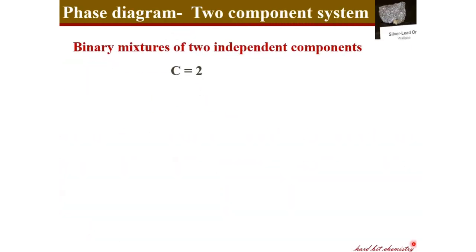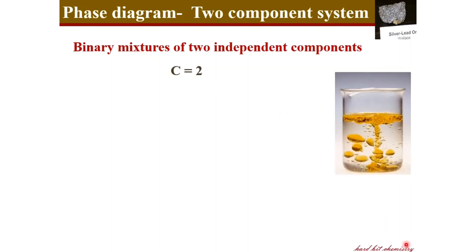A two component system, as it indicates, has two components — it is a binary mixture of two independent components. An example would be a mixture of oil and water, which forms a system of two components. Here, oil forms a separate phase from the water phase, so there are two phases as well.